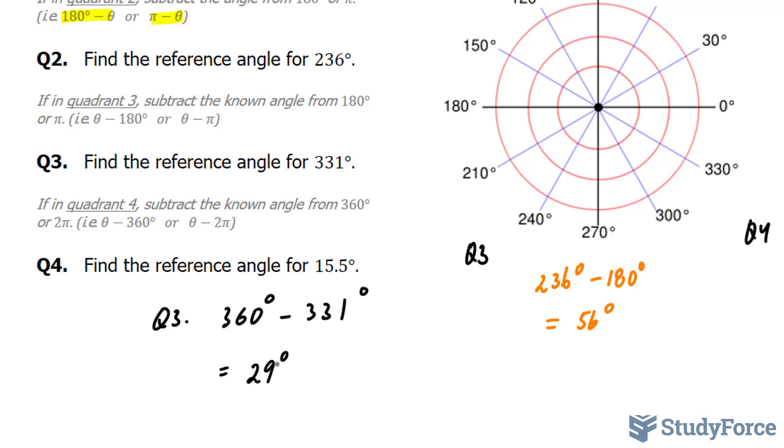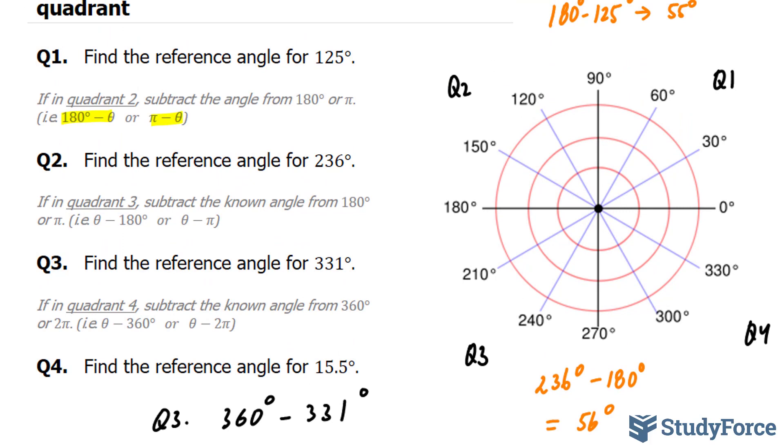And finally, find the reference angle for 15.5 degrees. 15.5 degrees is in quadrant 1. That itself is the reference angle. There's no need to do any further calculation.